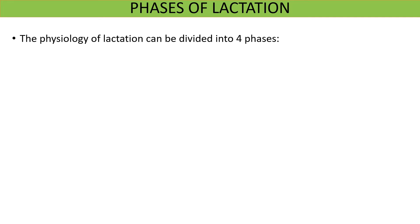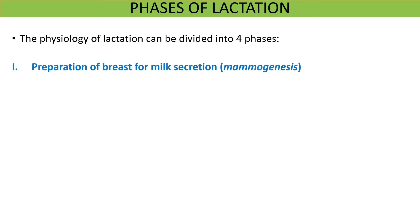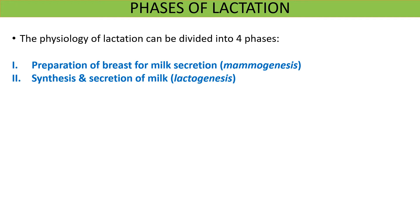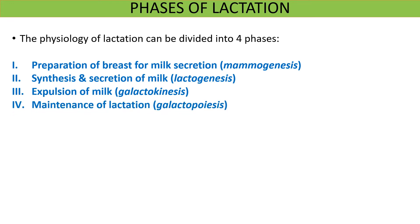Now let us see the different phases of lactation. The physiology of lactation can be divided into four phases: first is preparation of the breast for milk secretion, that is mammogenesis; second is synthesis and secretion of milk, that is lactogenesis; third is expulsion of milk, called galactokinesis; and fourth is maintenance of lactation, that is galactopoiesis.